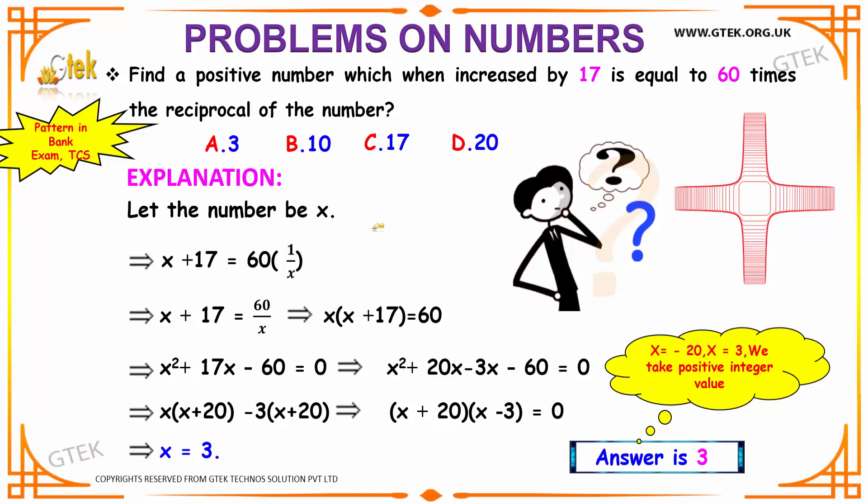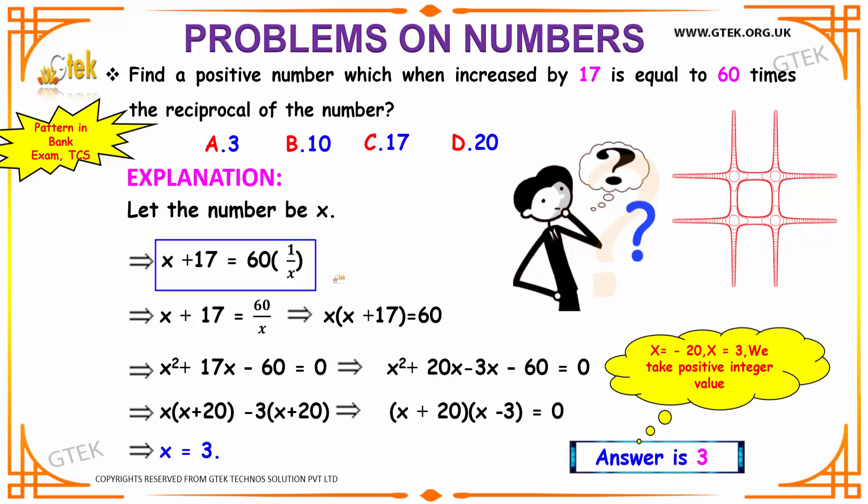And it is given that when our positive number is increased by 17, that is x + 17, will give you 60 times the reciprocal of the number, that is nothing but 60 × (1/x). Hence we got our first equation: x + 17 = 60/x.